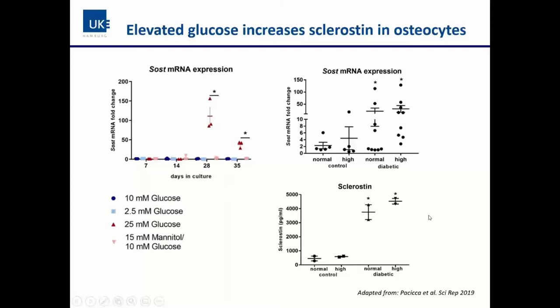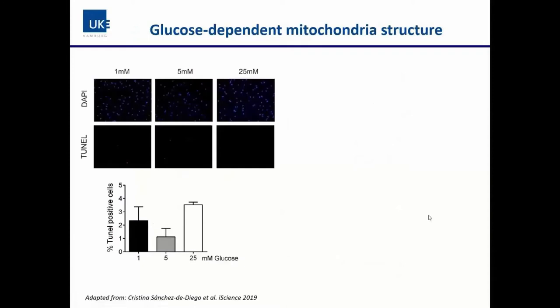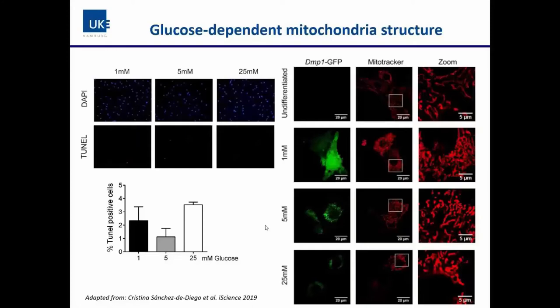Other investigators looked at glucose-dependent effects on MLY4 osteocytes. While there was a suggestion of a slight effect on apoptosis with high glucose staining, this was not statistically significant. Interestingly, these investigators showed glucose dependency on mitochondrial function — using MitoTracker to stain mitochondria, they found that at high glucose concentrations the mitochondria were more circularly arranged around the cell nucleus, suggestive of a mitochondrial phenotype associated with cell stress.